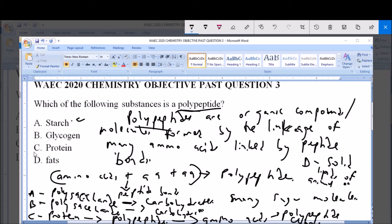So as we have rightly established, protein is a polypeptide. So option C, which is protein, is the correct answer to this question.